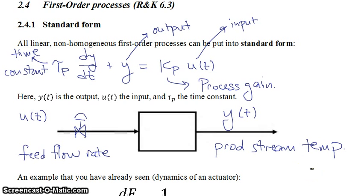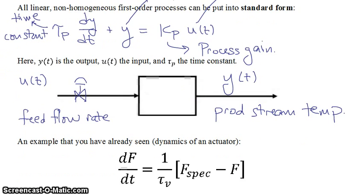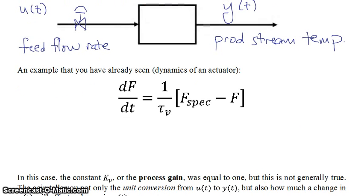You've already seen an example of a first-order non-homogeneous linear process, and that would be the example of the dynamics of an actuator. We can take the dynamics of this actuator and put it into standard form. If we multiply through by tau v, then you have tau v the time constant of your valve times df dt, and if I move f over to the left-hand side you get plus f equals f spec. Note that in this case there is no process gain or the value of your kp is equal to unity 1, but that's not generally true.